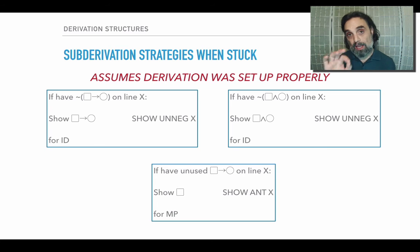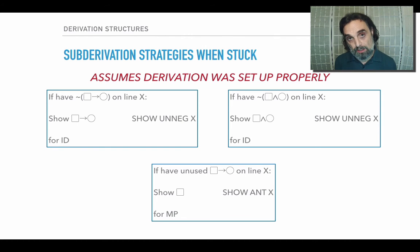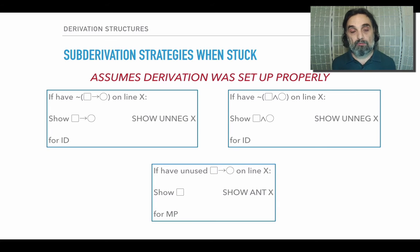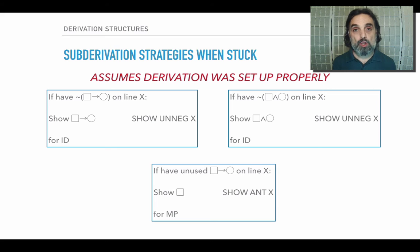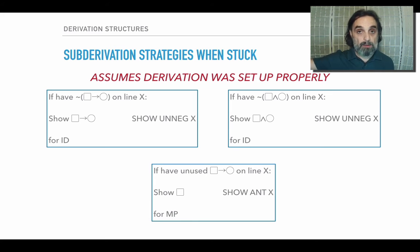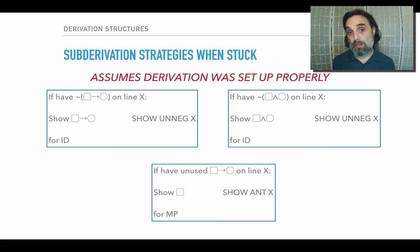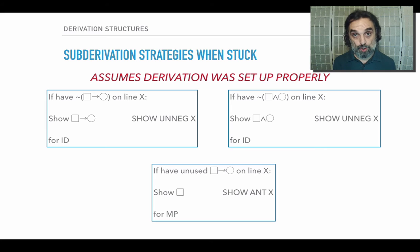There's a show command that will write out the conditional for us. If we have the negation of the conditional on line X, then we write show un-neg X, and that will write out just the conditional. The same applies if we have the negation of a conjunction and our derivation is stuck — we don't have rules that generally apply to it, but if we get the conjunction as well, we can apply ID. So we'll want to show the conjunction, and having done so, apply ID. The show un-neg command: if we have the negation of a conjunction on line X and write show un-neg of X, we get a new show line that's just the un-negation — in that case, the conjunction.